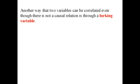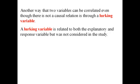Another way that two variables can be correlated, even though there's not a causal relationship, is through a lurking variable. Now a lurking variable is some variable that's related to both the explanatory and the response variable, but was not considered in the study.